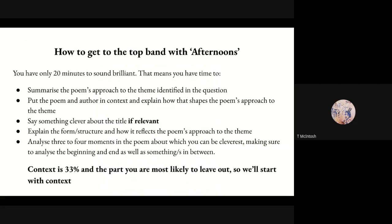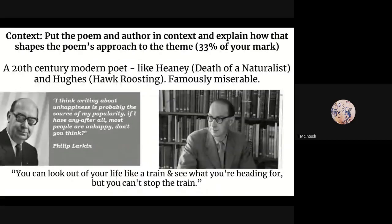So let's start with context, as ever — because context, what is it kids? 33% of your mark. Philip Larkin is a very famous poet, a 20th century modern poet. What we mean by modern is he's a 20th century poet, but he's not a contemporary poet like Carol Ann Duffy or Simon Armitage, who are still publishing and writing now. Larkin is dead, like Ted Hughes, like Seamus Heaney, and they are huge poets of the mid and second half of the 20th century.